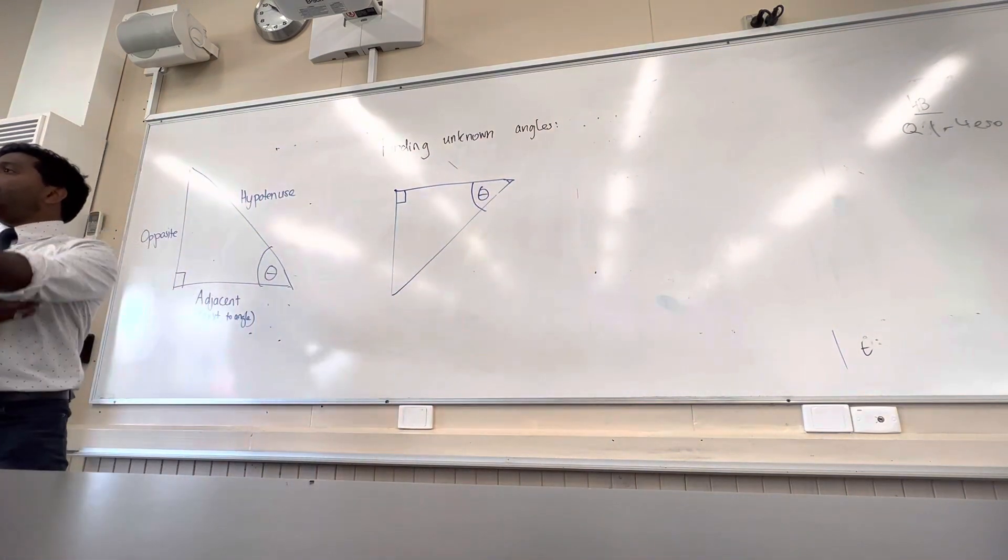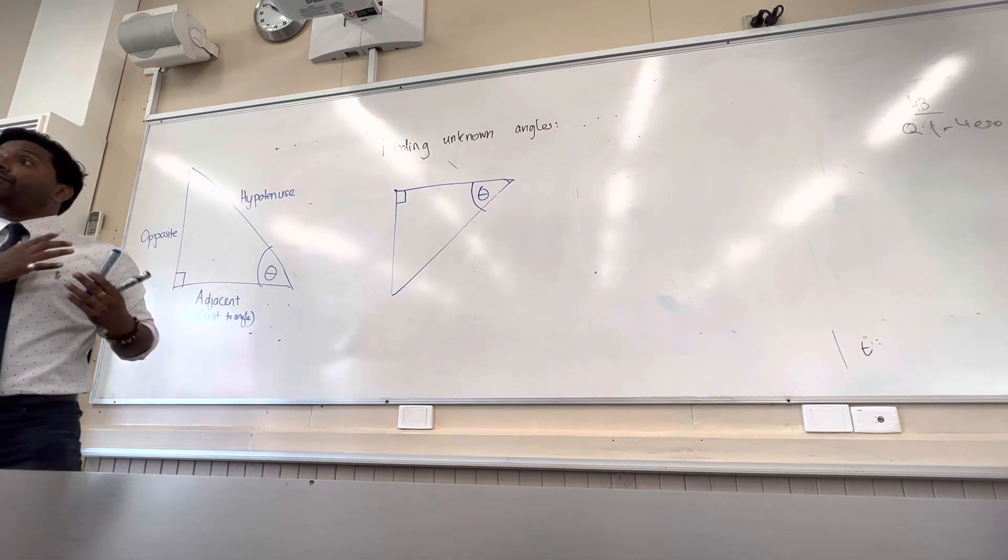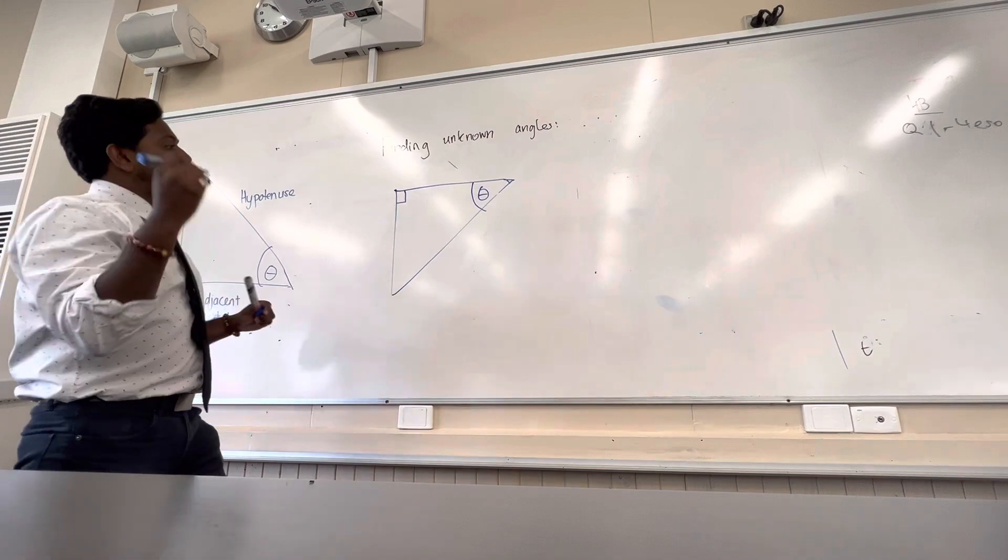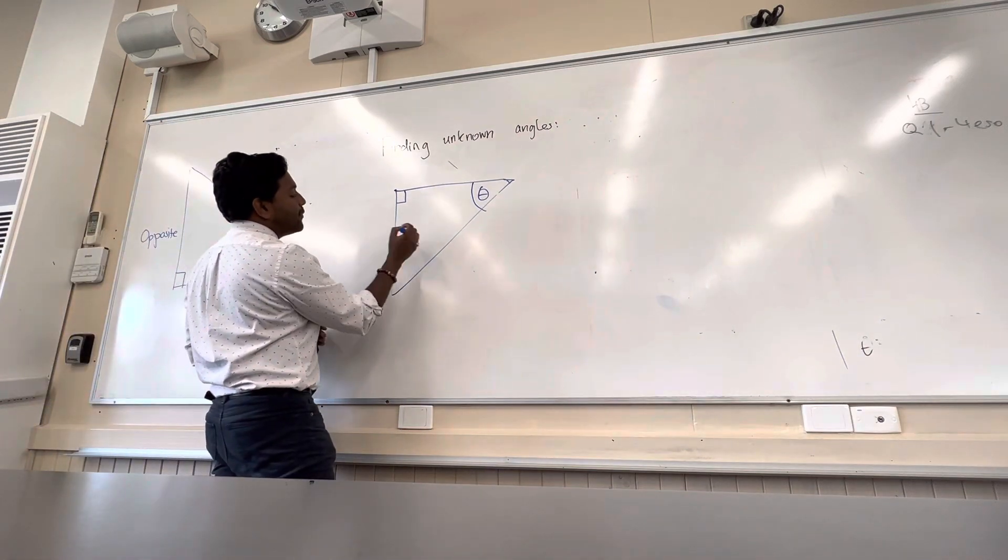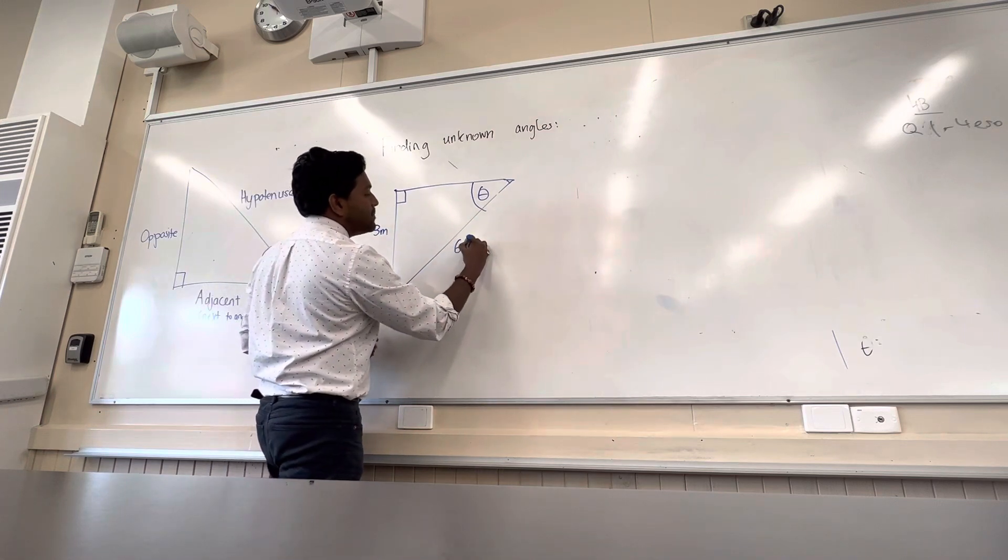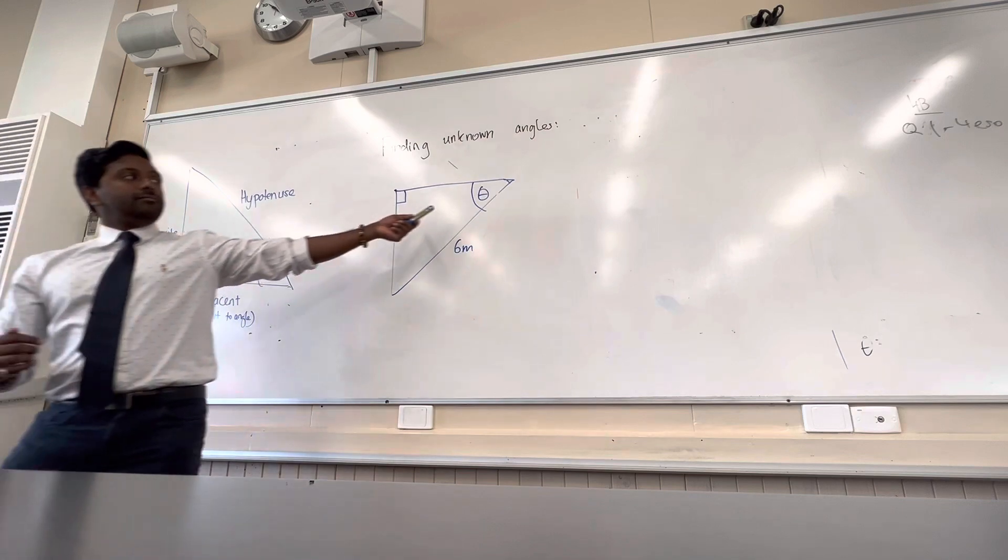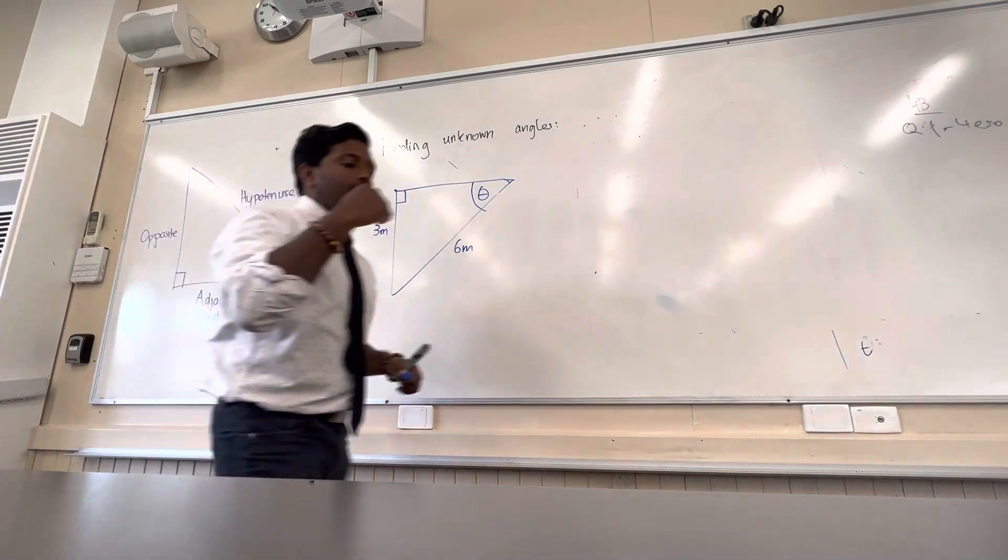For example, if I was to find out this particular angle which is theta, 4b will be for homework. So if you're not sure how to do it, I'm going through it now. This angle, let's say for example you had three meters and six meters.